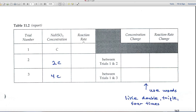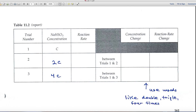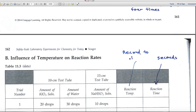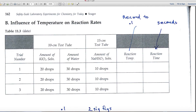You'll determine the reaction rates. When you look at concentration change and then reaction rate change, you'll be using words like double, triple, four times. Those will be fine — that's what the grader is looking for, that kind of terminology.